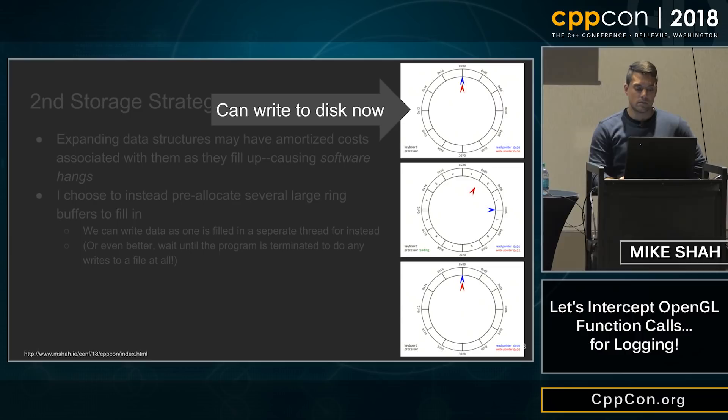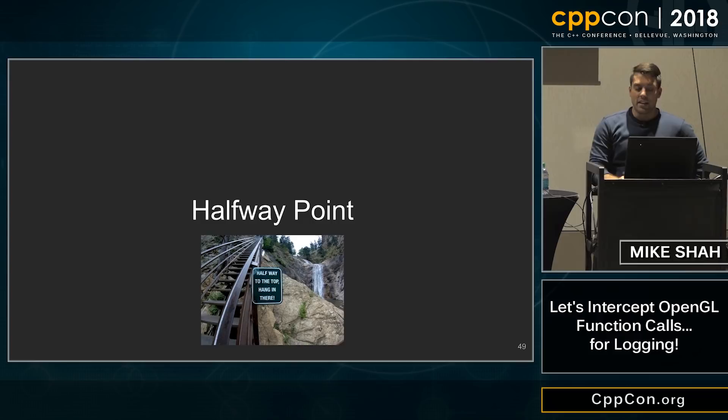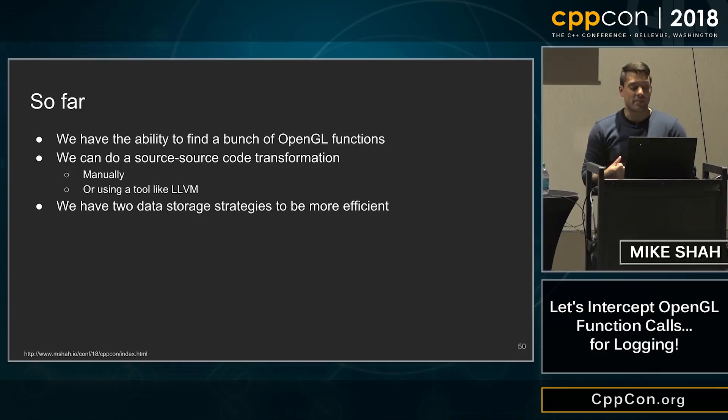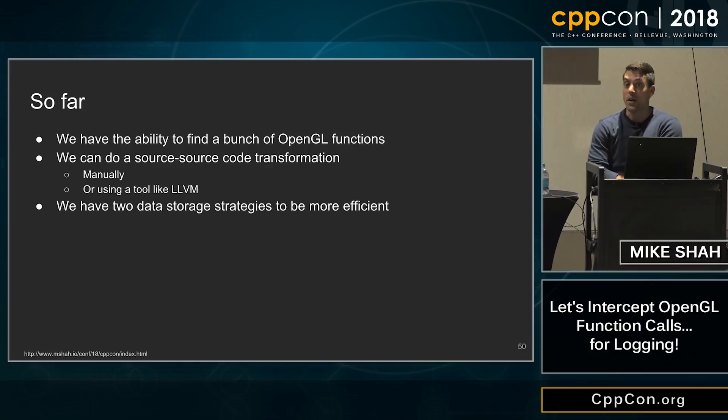So we're past the halfway point, and we've figured out a few things. We have the ability to find our OpenGL functions, do source-to-source code transformation — whether manually and painfully or using LLVM. And we have at least two data storage strategies to help us be more efficient, optimizing as needed.